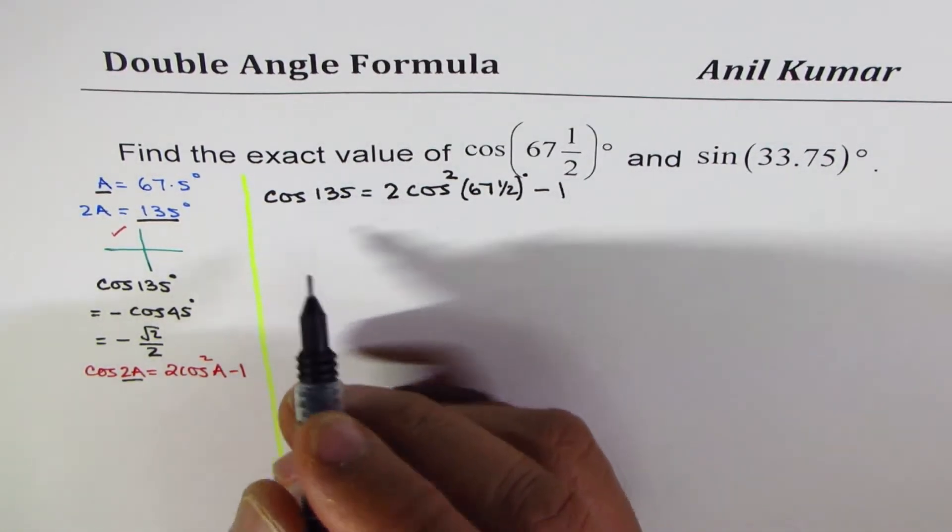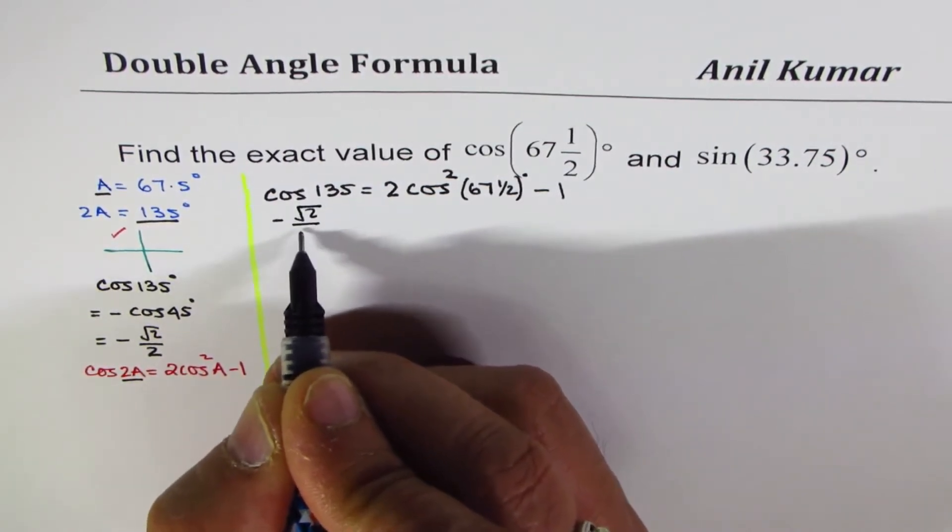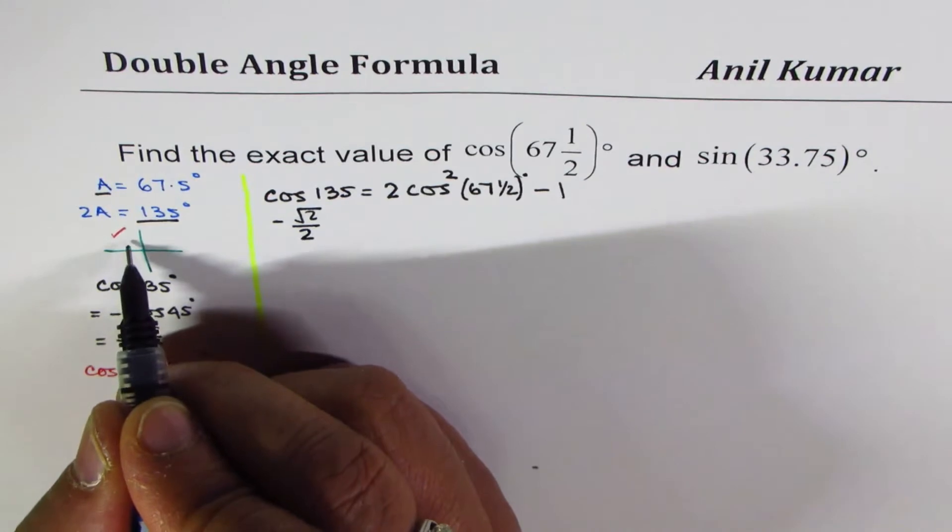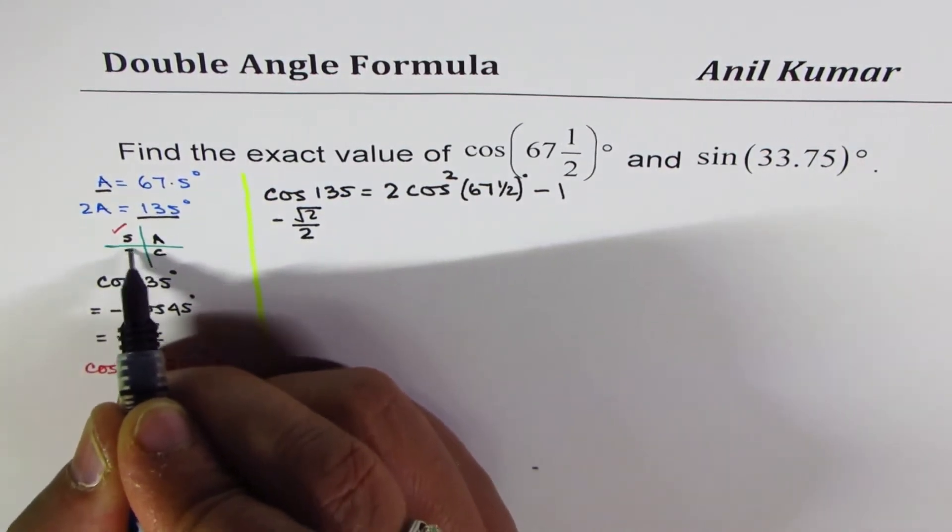Cos of 135 degrees is minus square root 2 over 2, since we are in quadrant 2. Only sine is positive here. Cos is positive in quadrant 4 and 1.